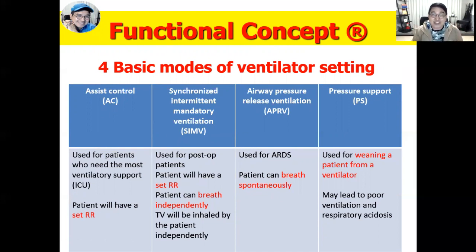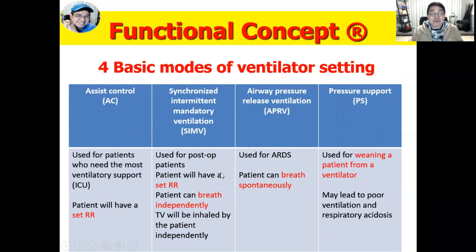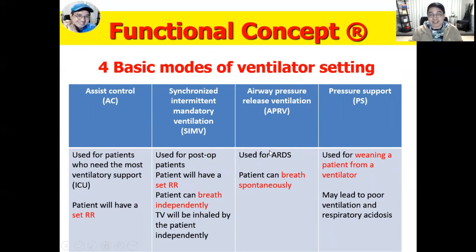The difference with SIMV mode is that the patient can breathe independently. During independent breathing in SIMV, the tidal volume is inhaled by the patient independently — not dependent on the machine. The similarity between AC and SIMV is that both provide a set respiratory rate. Airway pressure release ventilation, or APRV, is used for acute respiratory distress syndrome, rescuing patients in respiratory distress, and allows for spontaneous breathing.